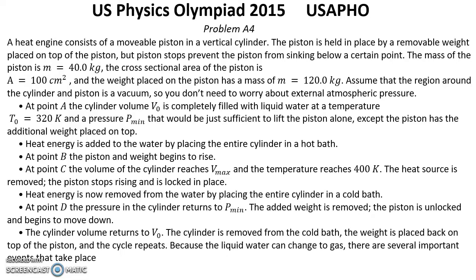Heat energy is now removed from the water by placing the entire cylinder in a cold bath. At point D, the pressure in the cylinder returns to P minimum. The added weight is removed. The piston is unlocked and begins to move down. The cylinder volume returns to V₀. The cylinder is removed from the cold bath. The weight is placed back on top of the piston and the cycle repeats.